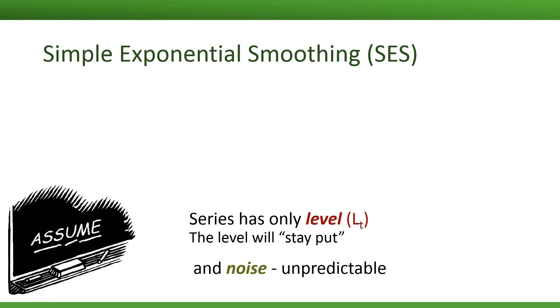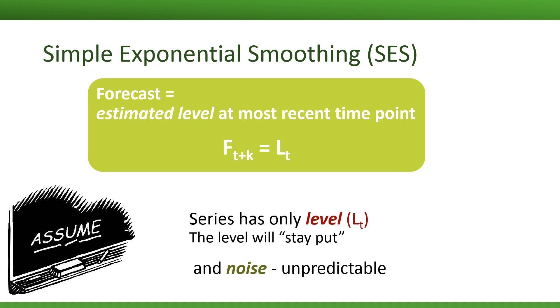Simple exponential smoothing, or simply SES, makes the assumption that our series only contains level, no trend or seasonality, and it does include error. So if we only have level, the assumption of the exponential smoother is that this level will stay put and not move. Therefore, the k-step-ahead SES forecast is simply the most recent estimate of our level at time t.